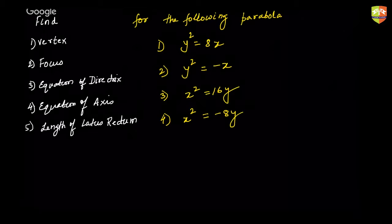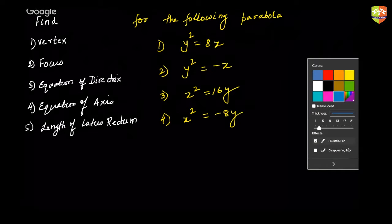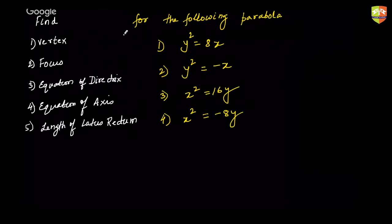I'm giving you exactly two minutes to complete this. So while you're solving it, let's start the discussion for the first one. The vertex is going to be at the origin. So I'll keep writing the answers over here as well. Let me write it in blue. So vertex for the first one is (0, 0) — no doubt about it.